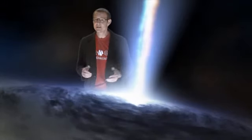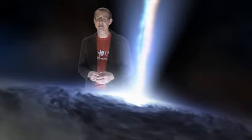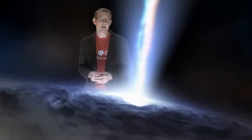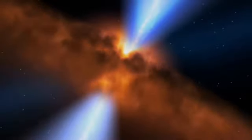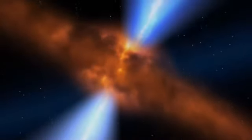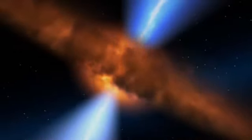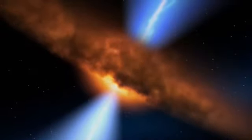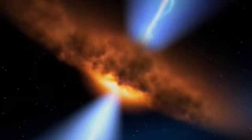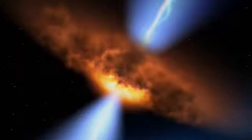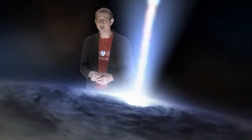Now these active, accreting black holes are called quasars and they're amongst the most luminous and most powerful objects in the universe. The thing is, a quasar can get so greedy that its radiation is powerful enough to actually blow away all the gas and the dust that is feeding it. And so it seems that there's a natural upper limit to the rate at which a black hole can grow.